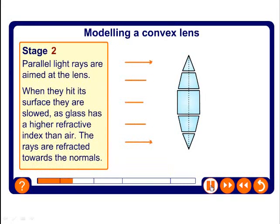So we shine some parallel lines at the prisms. Here's our normal lines in purple. What's going to happen to this one? Well it's going from air into glass so it's going to bend towards the normal. What's going to happen to this one? Well it's going along the normal so it's going to carry straight on.